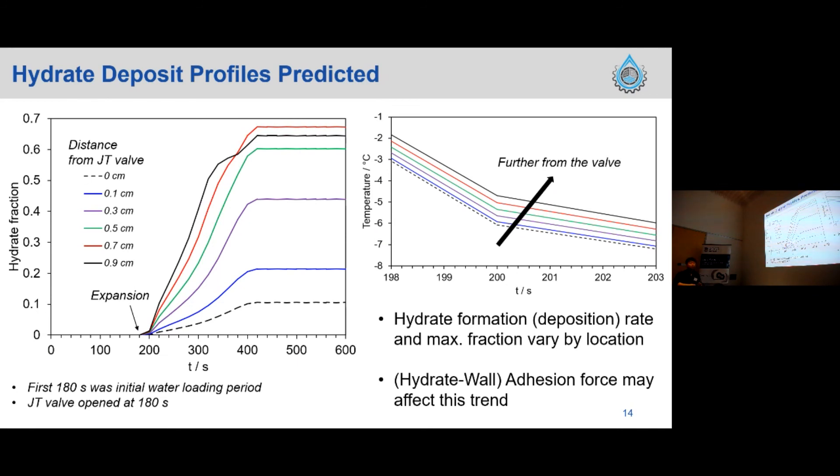We made a good prediction of the hydrate plug, and let's have a look at the profile of the plug. There are different locations, and the zero, which is dashed line, is where the JT valve locates. It gave the coldest temperature through the downstream section, but when you look at this hydrate fraction, it doesn't correspond with the greatest hydrate deposition. There must be some interesting physics behind, like flowing through the JT valve, and we need to test this actually in our experiment.